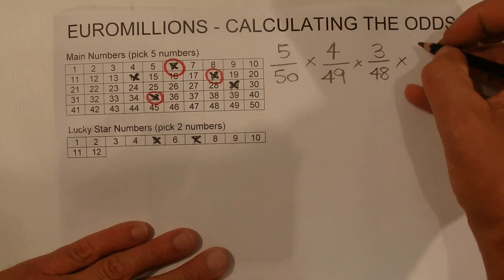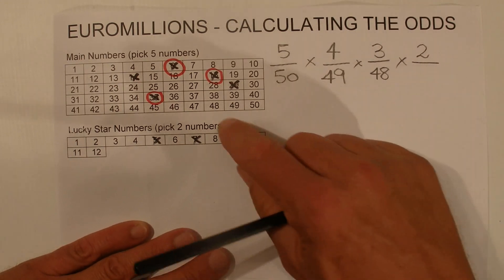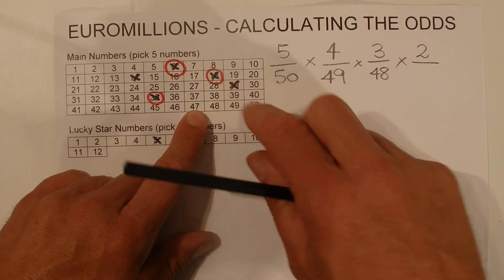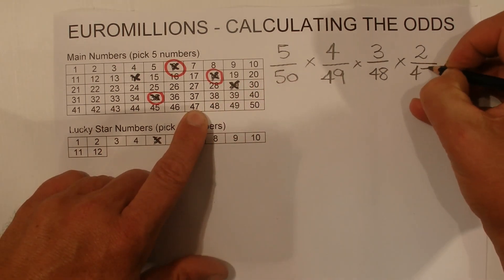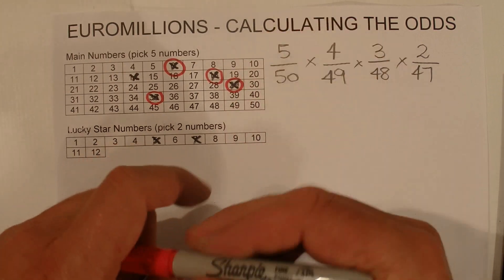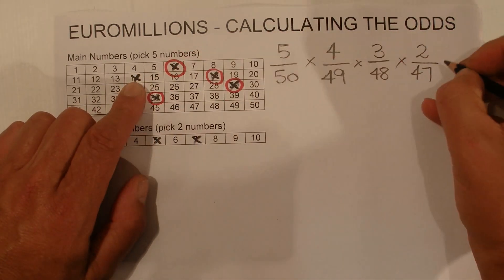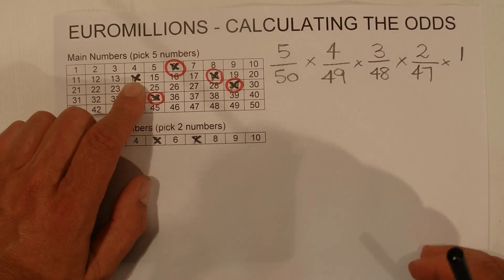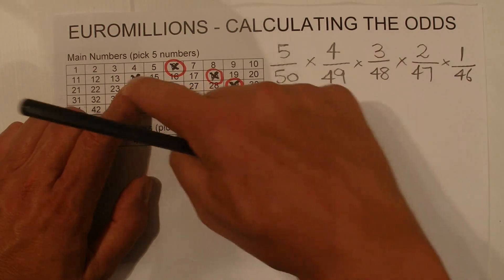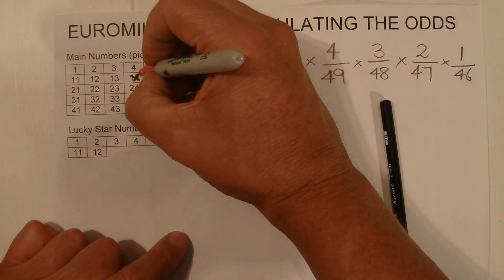When the fourth ball is drawn, you've got two chances, and three balls have already been taken from the drum, so you're left with two chances in 47. Mark off one of those numbers. Then when the last ball is drawn, you have one chance in 46, because you've got one ball left and there are 46 balls left in the drum for the machine to choose from.